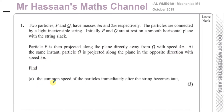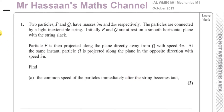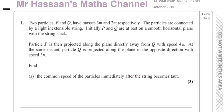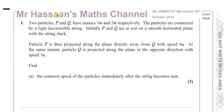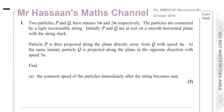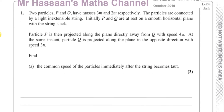Find the common speed of the particles immediately after the string becomes taut. So first of all, we have a string which is attached to two particles P and Q.